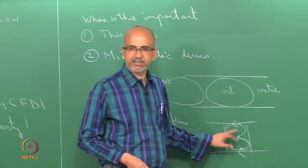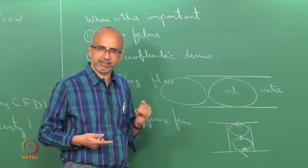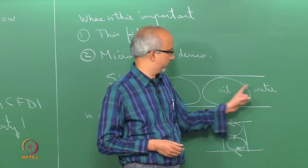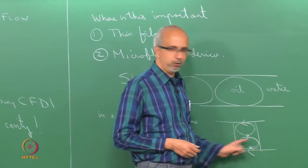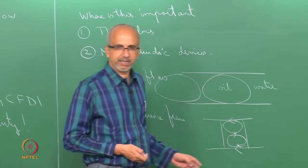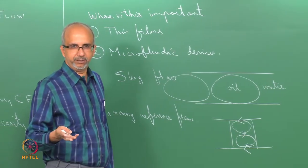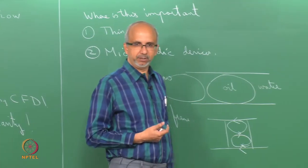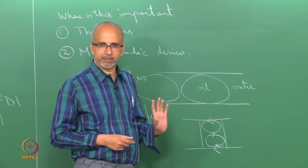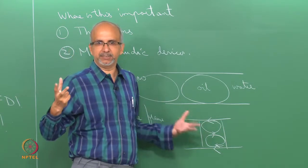What we want to do is understand these internal circulations, because that is going to help in mass transfer and heat transfer. When you are trying to do some kind of a reaction and there is some species which has to be transported from the aqueous phase to the organic phase or vice versa, this flow is going to actually help in moving the species. One wants to understand how these vortices are developing and get some idea about the magnitude of the velocity. One approach is CFD, and the other is to see if you can get some insight without CFD.